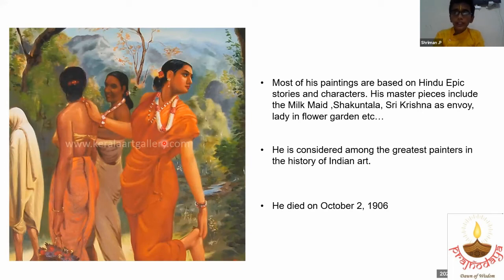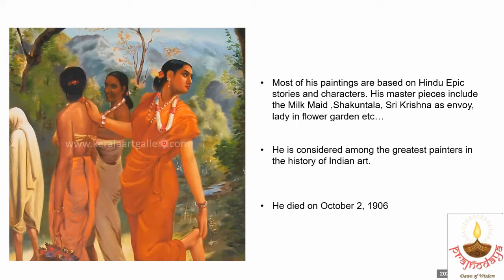Most of his paintings are based on Hindu epic stories and characters. His masterpieces include The Milkmaid, Shakuntala, Shri Krishna's Envoy, Lady in the Flower Garden, and more. He is considered among the greatest painters in the history of Indian art. He died on October 2, 1906.